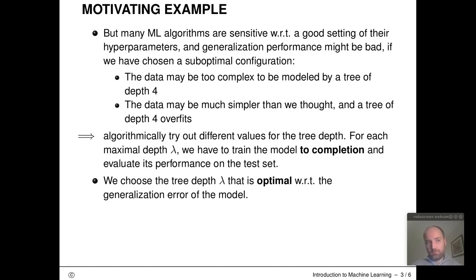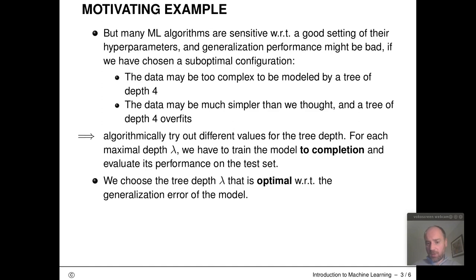It's now obvious what we could do to repair this problem: if our generalization error is not as good as we hope, we could try out different configurations — different lambda values — and check generalization performance again and again. Hyperparameter tuning tries to automate this process algorithmically, reducing the problem of finding the optimal hyperparameter configuration to a search or optimization problem. We repeatedly train or cross-validate models with different configurations lambda and choose the one optimal with respect to generalization error.